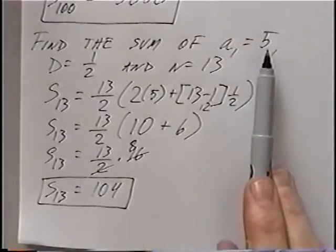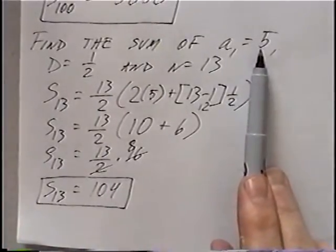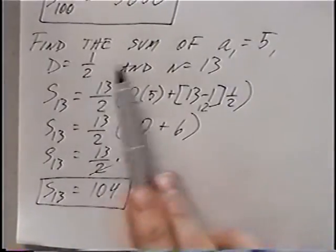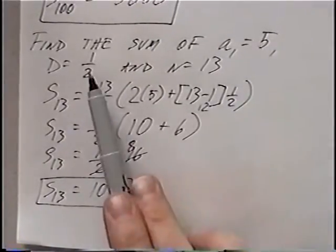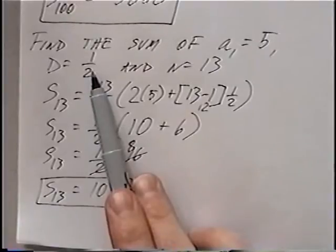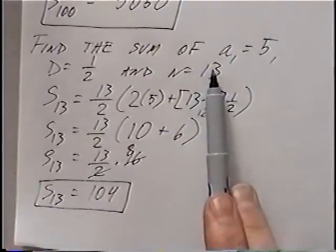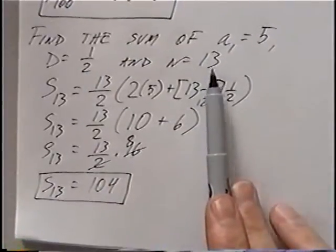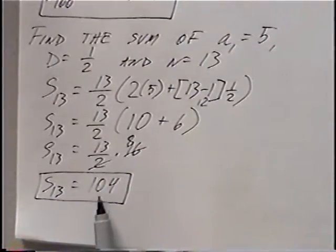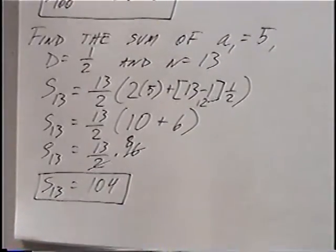Starting at the first term 5 with a difference of one-half — meaning every number increases by one-half — if we do that for 13 numbers and add all of them up, the result is 104.